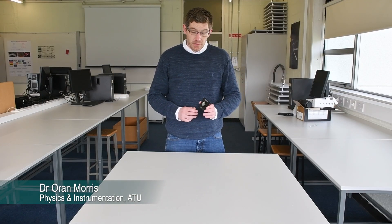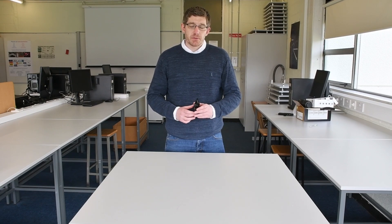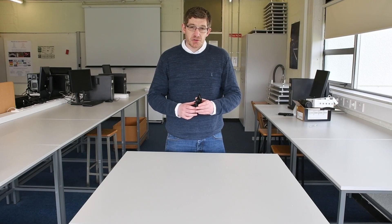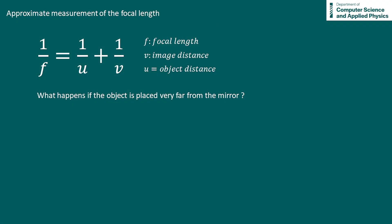In this video we're going to determine the focal length of a concave mirror. Before we can make a precise measurement of the focal length, first we need to make an approximation. This will help us set up our experiment later. To do that we need to capture an image of an object that's very far away, or at an infinite distance. To make an approximate measurement of the focal length we can use the lens formula: one over f equals one over u plus one over v.